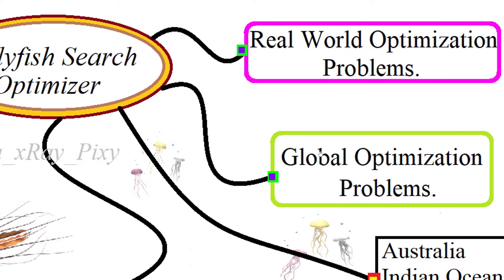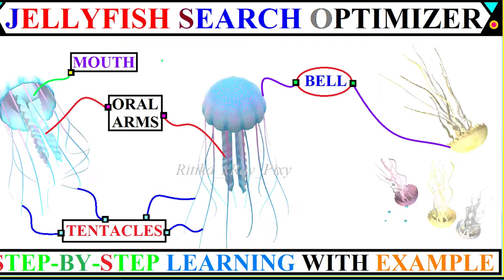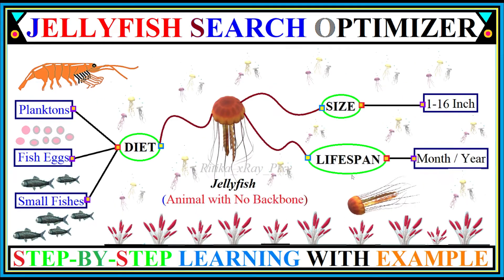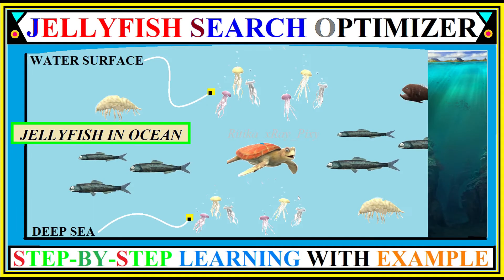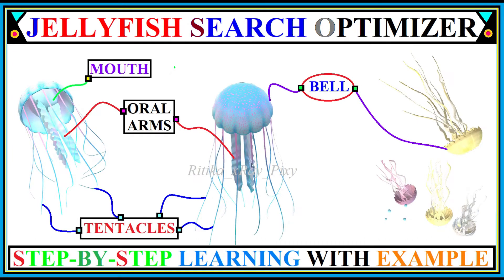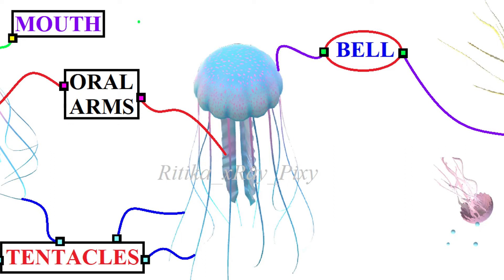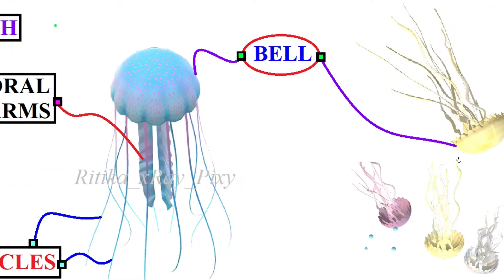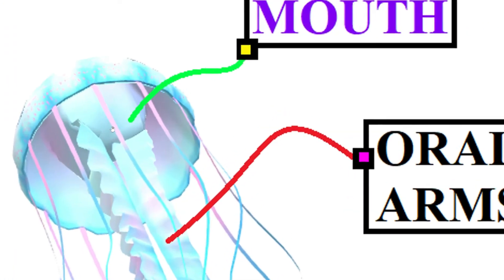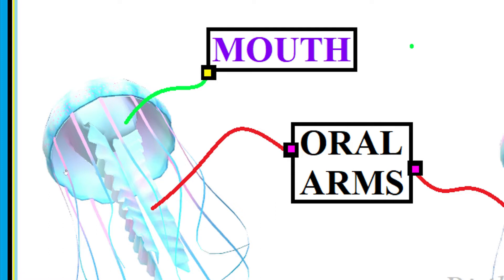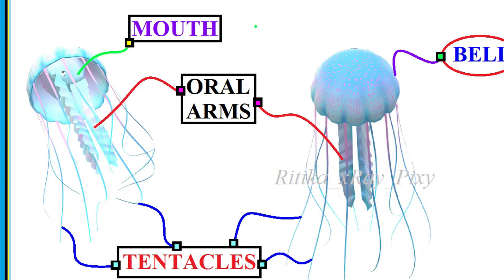This algorithm can be used to solve global optimization problems and complex real-world optimization problems. It is inspired by the jellyfish food search behavior in the ocean. The basic jellyfish body structure shows different body parts — jellyfish are free-swimming marine animals without a backbone. They have a soft, round, transparent bell-shaped body with tentacles that can sting. Around the jellyfish mouth you can see long stinging tentacles.